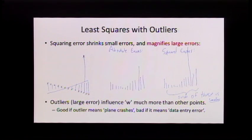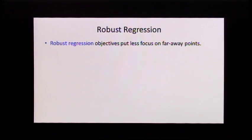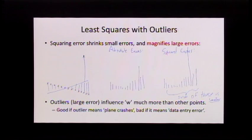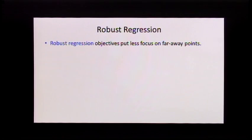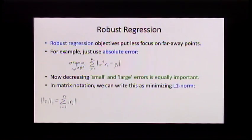It depends on what you want. If you really need to get the outliers right — if the outlier is the case where your plane is going out of control — then the squared error model is right. But if the outlier is because you entered the data wrong, it's the wrong model. That leads us to robust regression. We squared things for computational convenience, but now I'm arguing that squaring things is maybe not so good. Robust regression puts less focus on far-away points, making us less sensitive to outliers. The simplest example is just using the absolute error: instead of squaring, we look at the absolute value, so small errors and large errors get equal weight.